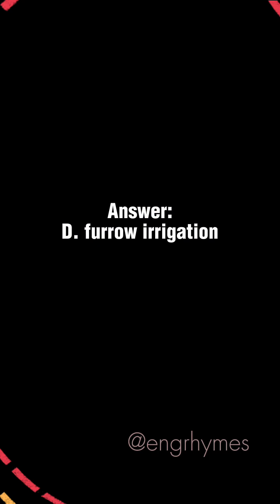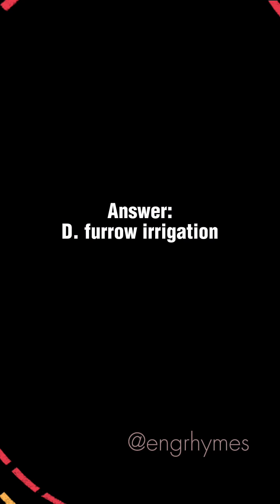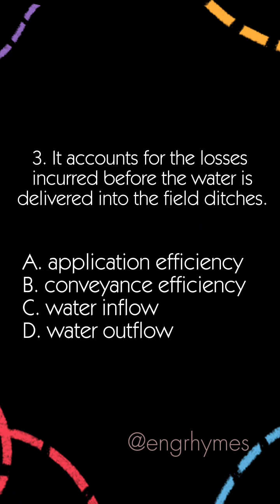Answer: D. Furrow irrigation. Next question: It accounts for the losses incurred before the water is delivered into the field ditches.